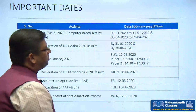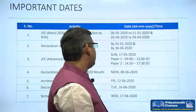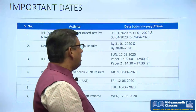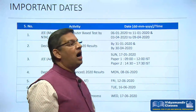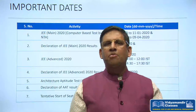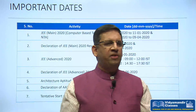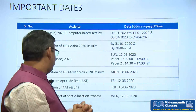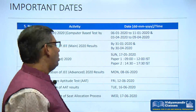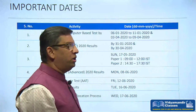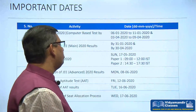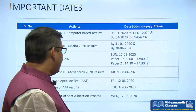So the first paper is from 9 to 12 p.m. and the other paper is from 2:30 to 5:30. We have a break of two and a half hours between the two papers. JEE Advanced results will be declared on 8th June.